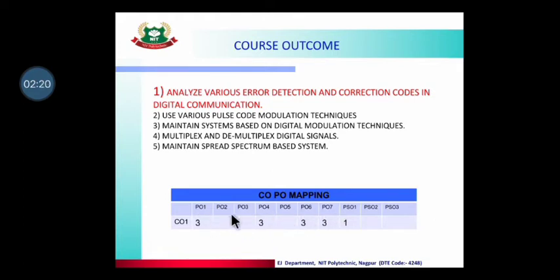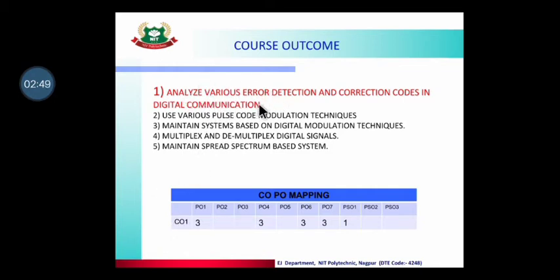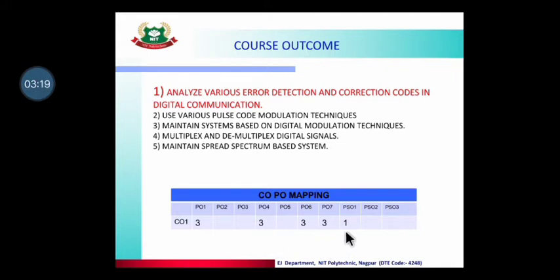This is the CO-PO mapping — course outcome versus program outcome. There are seven program outcomes as per the revised AICTE norms. Program outcomes define what qualities should be developed after completing the full diploma. CO number one, after completion, satisfies PO1, PO4, PO6, and PO7. Since this part depends on coding and maintenance, we also satisfy the PSO (program specific outcome). The numbers three and one indicate the level — three is highest level, one is a lower level of satisfaction.